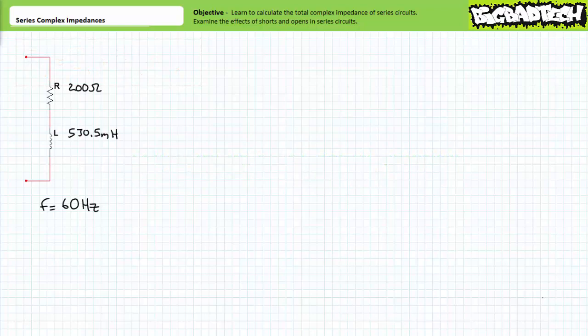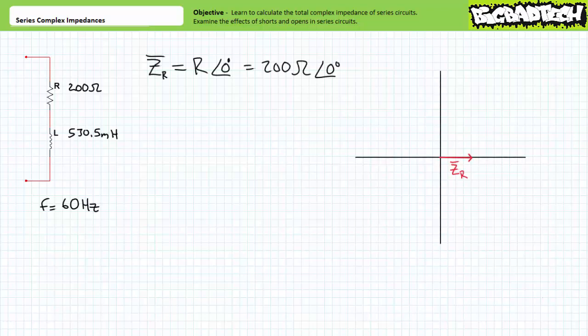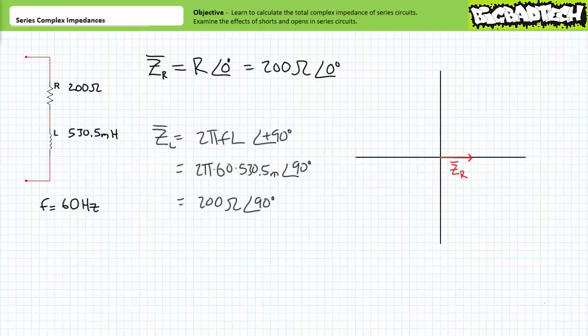Consider the series or inline relationship of a 200 ohm resistor and a 530.5 millihenry inductor subjected to sinusoidal AC voltage with a frequency of 60 hertz. We need to convert these individual components to complex impedances and then add them up. The 200 ohm resistor is a complex impedance of 200 ohms at an angle of zero using polar format. You don't need a formula to calculate resistive complex impedance — just take the resistance value and place it at an angle of zero degrees. The complex impedance of an inductor is 2πFL at an angle of positive 90 degrees. Substituting in our given values, we arrive at an inductive impedance of 200 ohms at an angle of positive 90 degrees.